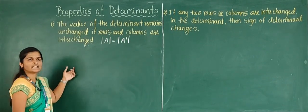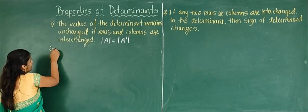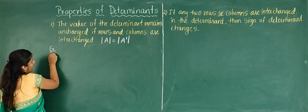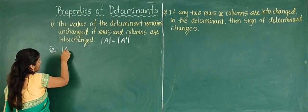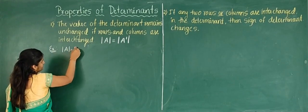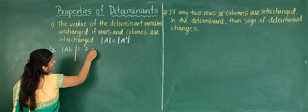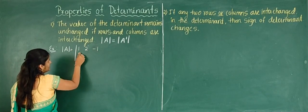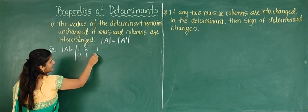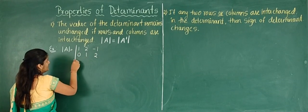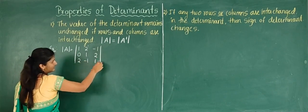Let me take one example to verify this. I will take the determinant with elements: 1, 2, minus 1 in the first row; 0, 1, 2 in the second row; and 2, minus 1, 1 in the third row.